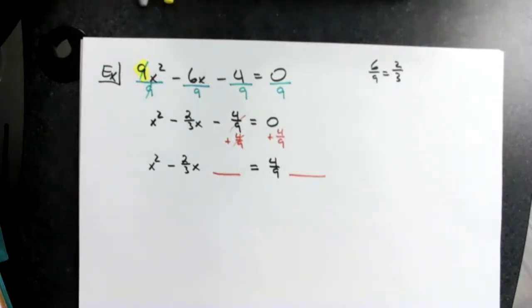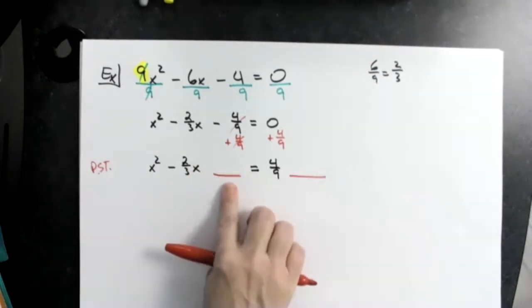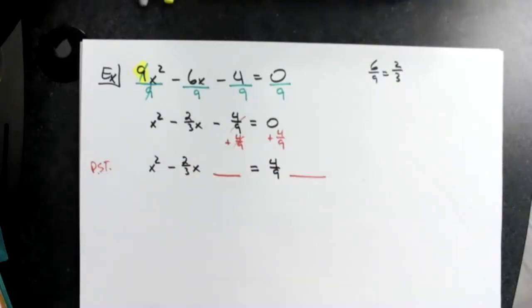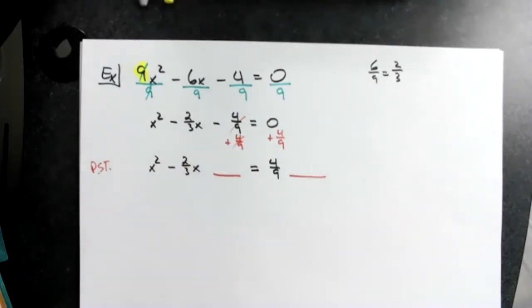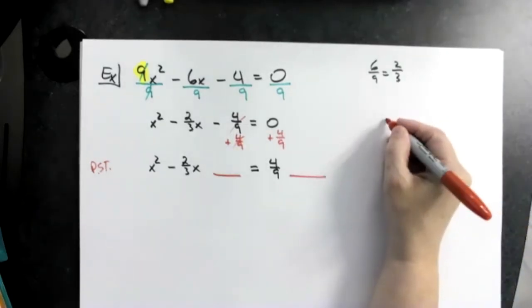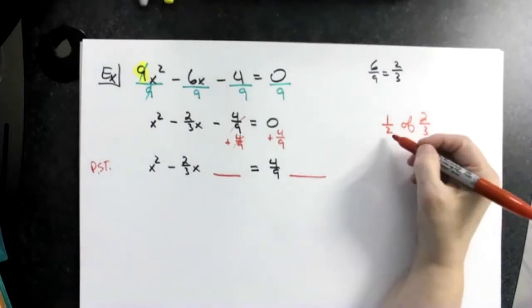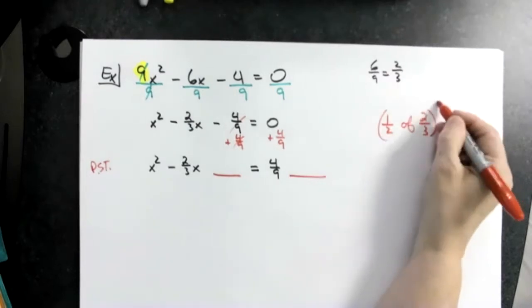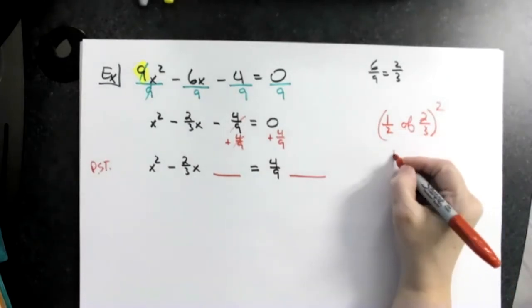Now again, I need to make this a perfect square trinomial. The only thing is we did not deal with perfect square trinomials having fractions in there, and this is why people don't like this method. Once you start getting fractions in there, it's not as easy to recognize. But what do we have to do with this number? We have to take half the number and then square it. So I'm going to show it over here. I need to take one half of two-thirds. Of means to multiply. I need one half of two-thirds, and then I need to square it.